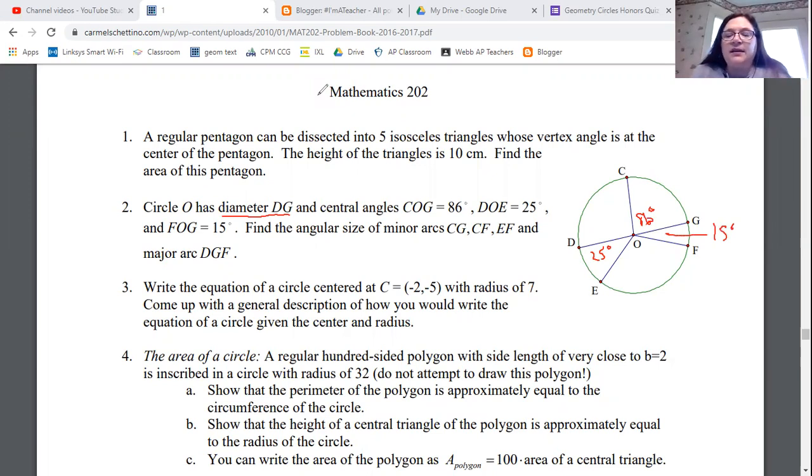Find the angular size of some of these minor arcs. So we know that the angular size of an arc, arc sizes are reported in degrees just like angles. And they match their central angles. So if I need to find the angular size of CG, it's going to be exactly what its central angle is. And its central angle is 86. So the angular size of CG, 86 degrees. CF. Well, CF goes through G and onto F. So I've got 86 plus 15. So CF is going to be 86 plus 15, 101. And it is degrees. We measure arcs in degrees. So CG is 86 degrees. CF is 101.